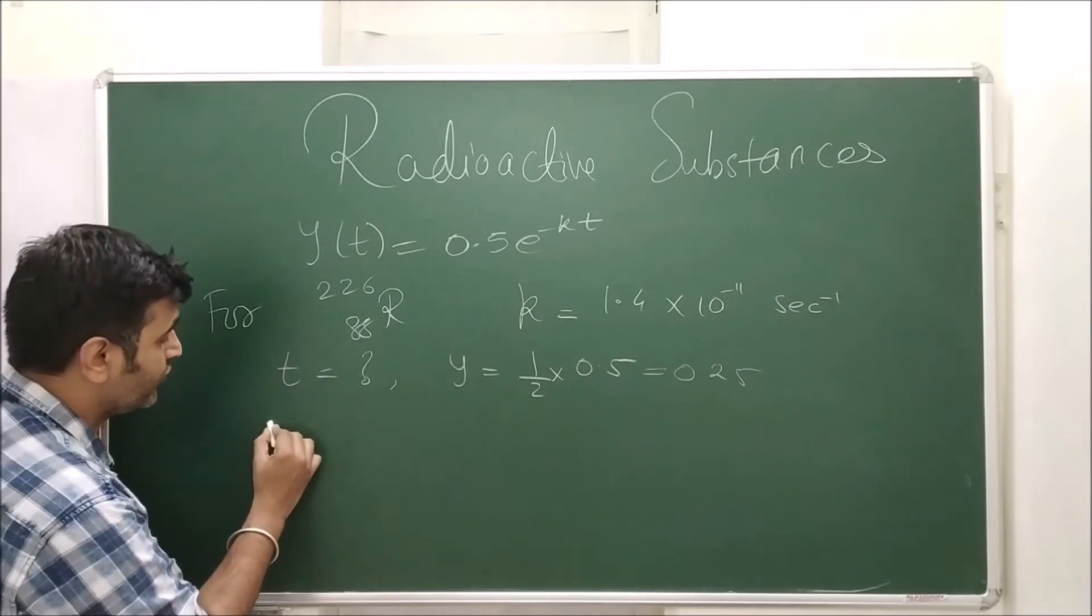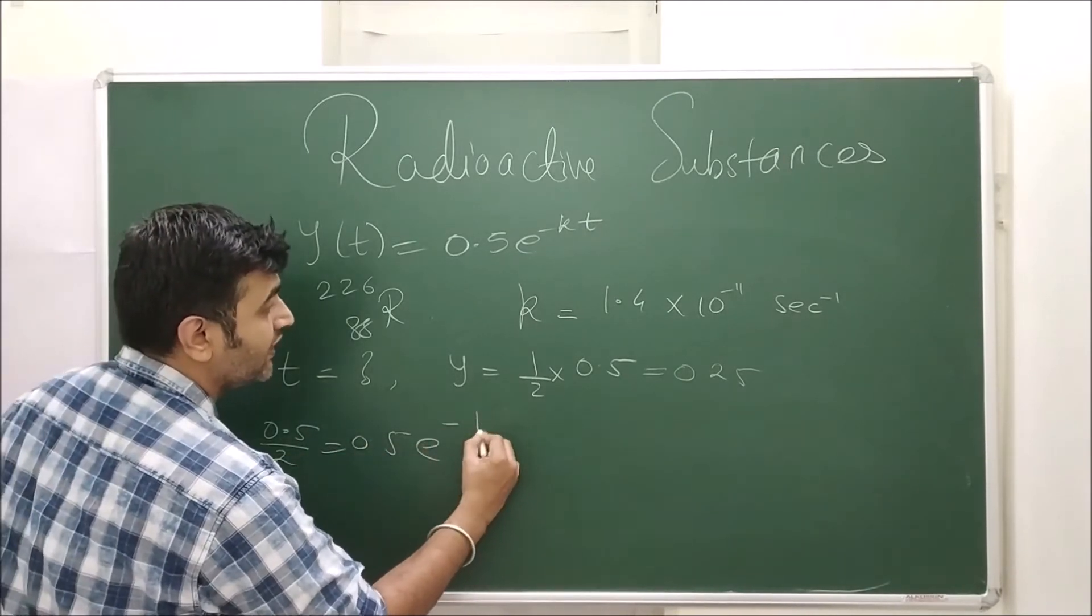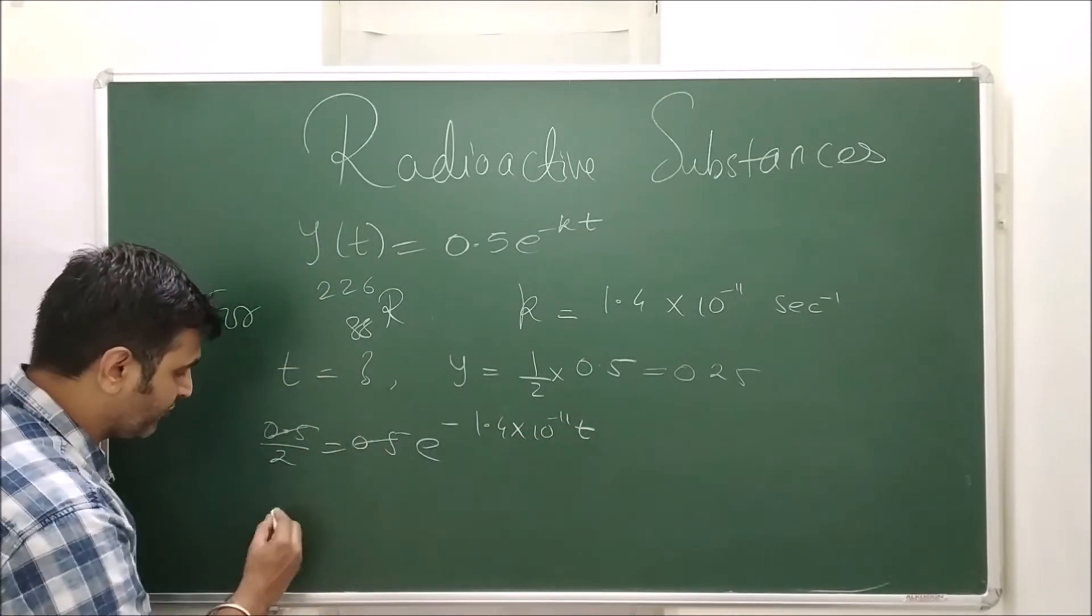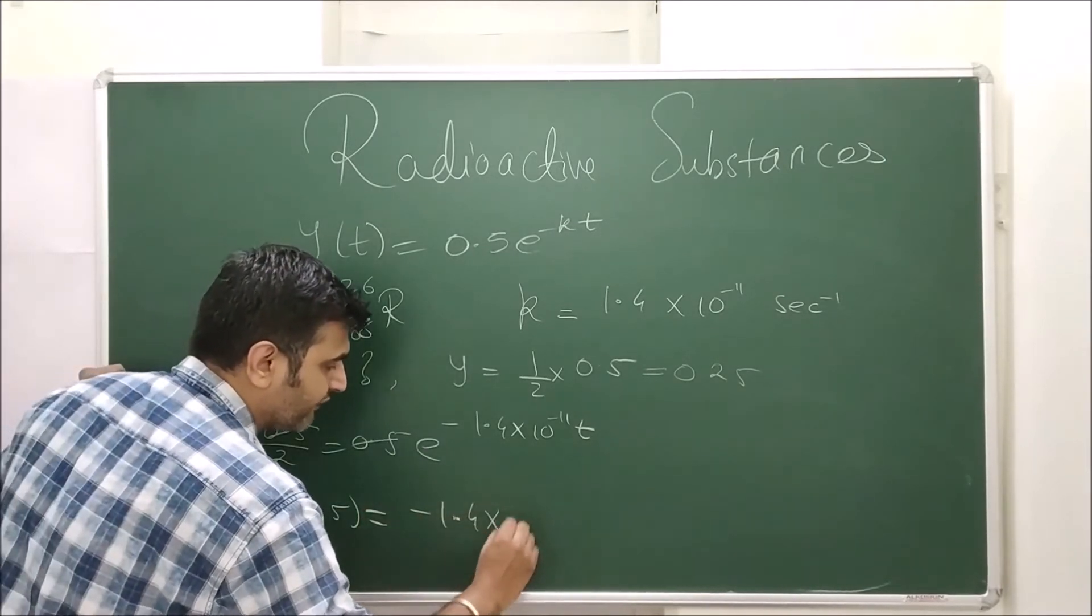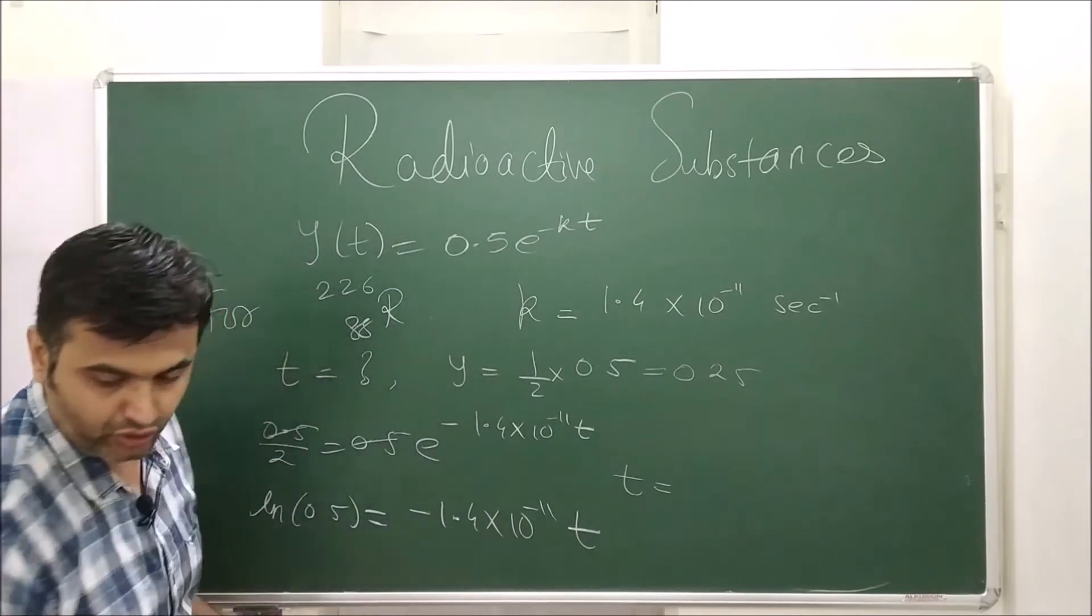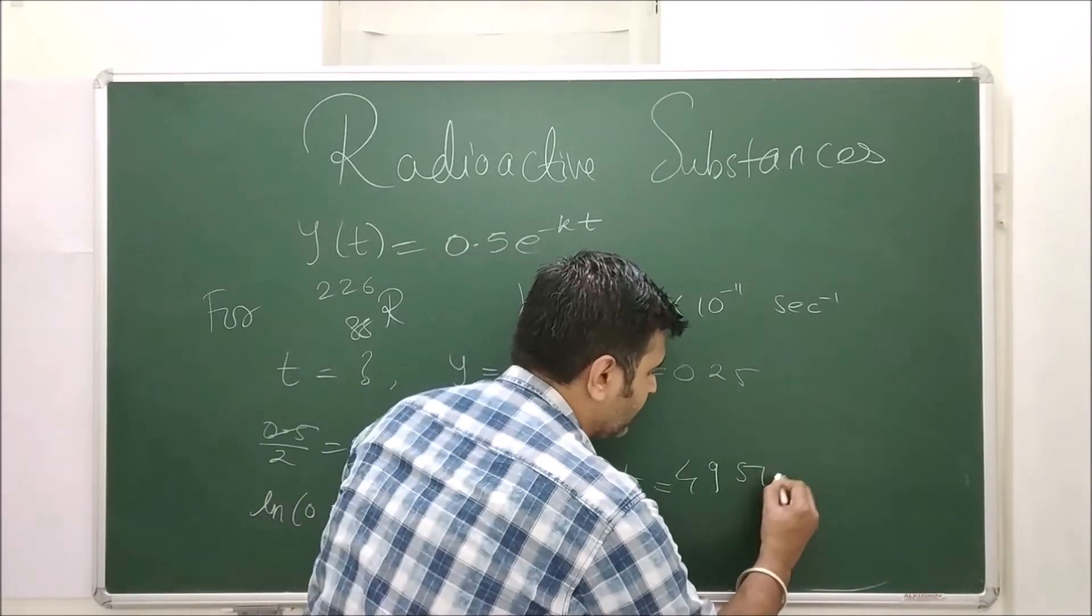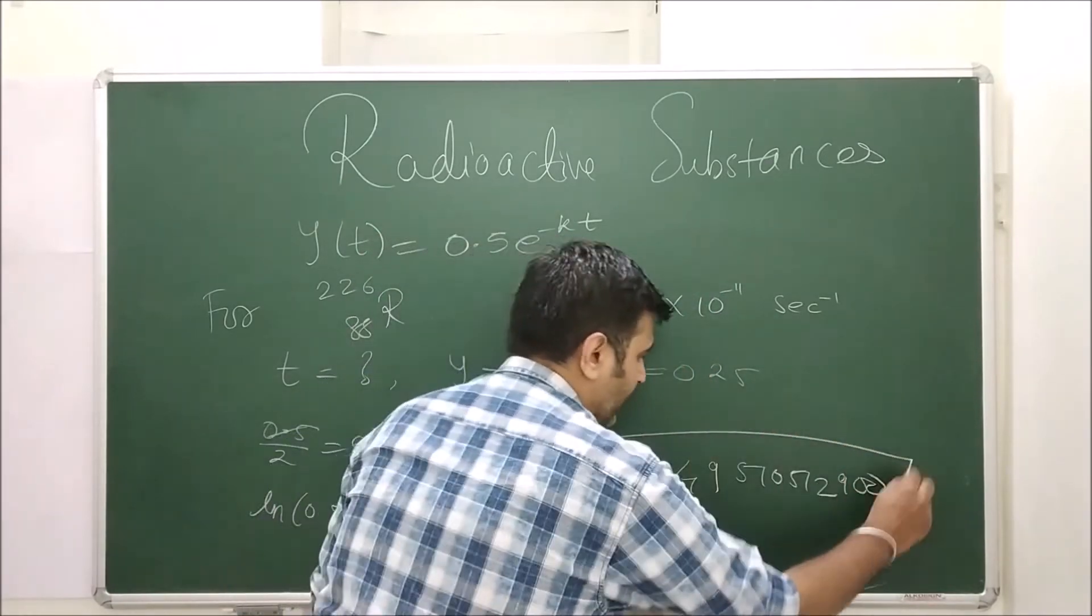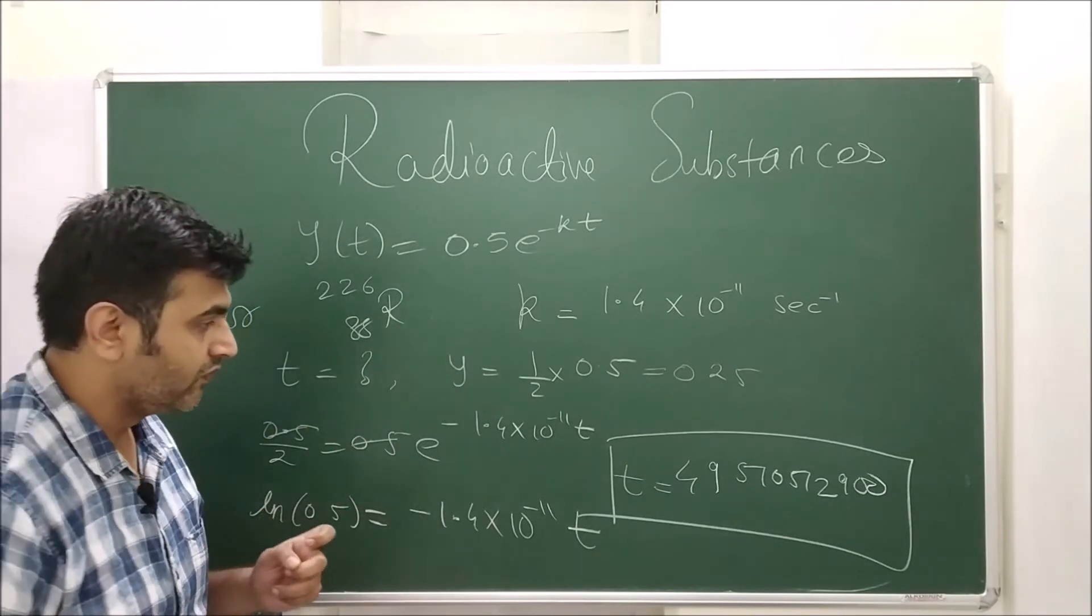When you put the value, you get 0.5/2 = 0.5 × e^(-1.4 × 10^(-11) t). This is 0.5, so ln(0.5), I remove exponential, equals -1.4 × 10^(-11) t. When you do this division, your answer comes out to be, I have done the calculation, 51,512,900.